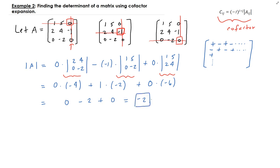It doesn't matter which column or row you use — you're always going to end up getting the same determinant using cofactor expansion. In the next example, I'm going to show you a different method for finding the determinant, but that will only work with three-by-three matrices. They use this quite a bit in physics.